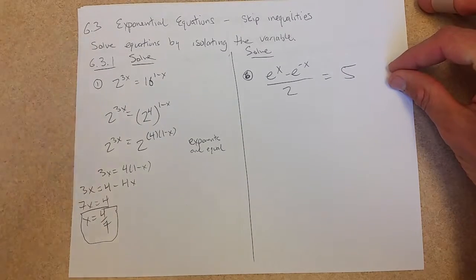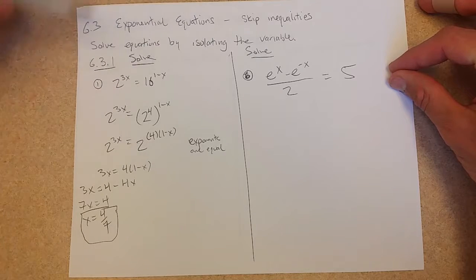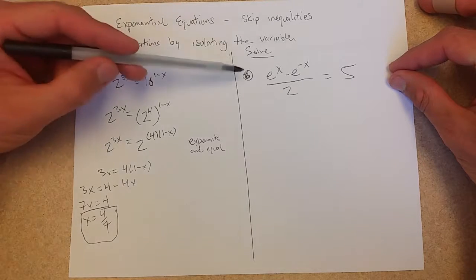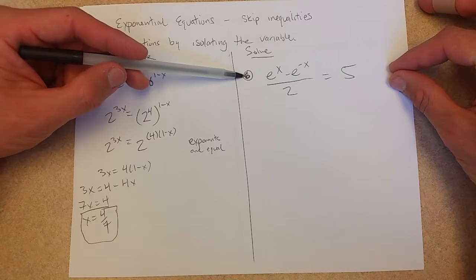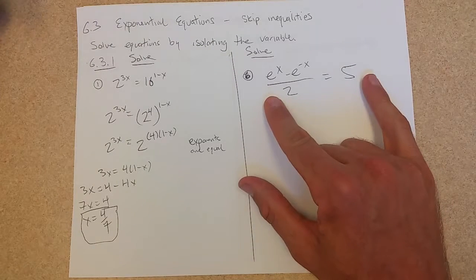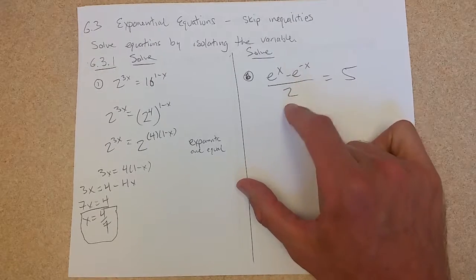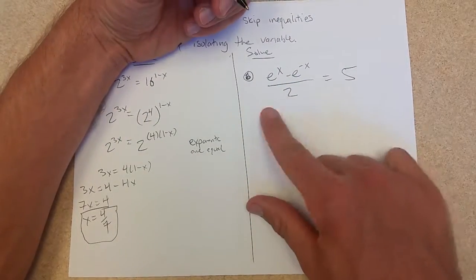Now we're going to solve over here. And I pulled this example right out of 6.3. This is number 1, and this one will be number 6 here. All right, isolate the x, the variable. First move, let's get the 2 out of here. Multiply both sides by 2.